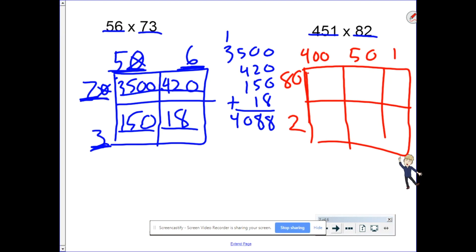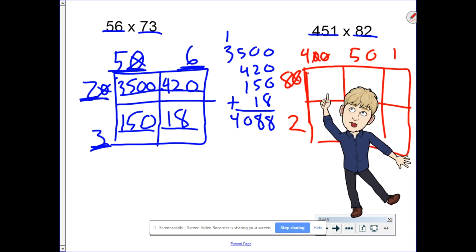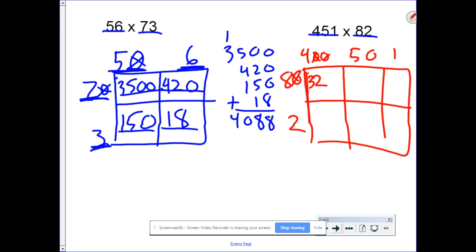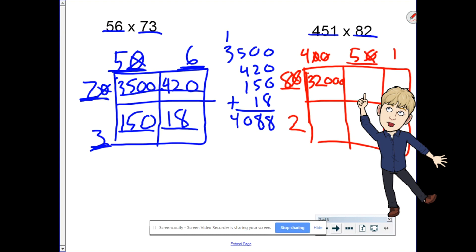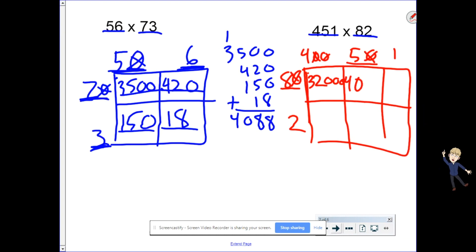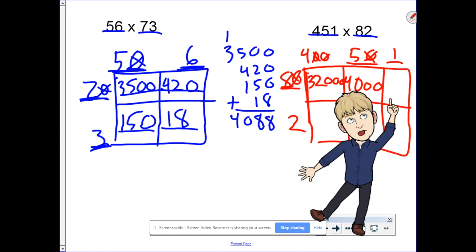Let's look at this first box. Ignore those zeros. 8 times 4 is 32. Tack on three zeros, we get 32,000. 80 times 50. 8 times 5 is 40. Tack on two zeros, we have 4,000. 80 times 1 is 80.